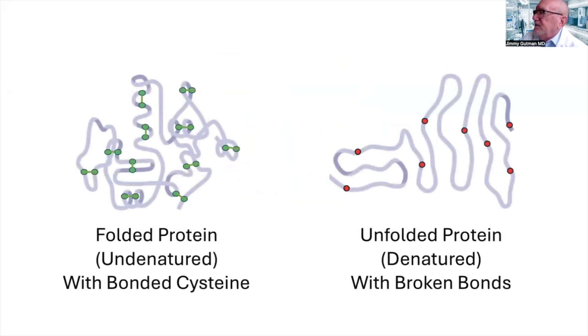On the left, we see an undenatured protein with intact bonded cysteine, which can act to raise glutathione. And on the right, we see a denatured protein with the broken bonds, which has lost its ability to raise glutathione. The one on the left is biologically active and the one on the right is not.